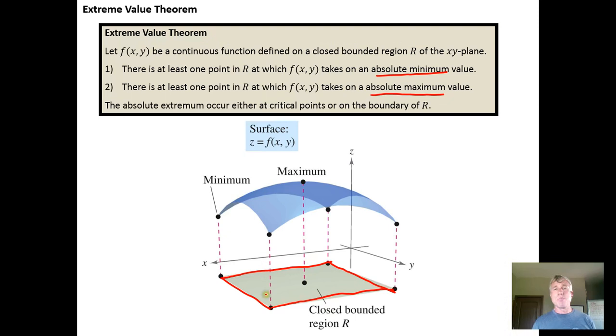And the largest or smallest value can occur in a couple ways. One, it's possible for the maximum to be at one of the critical numbers - or sorry, critical points, because we're working with critical points now, ordered pairs. That's a function of two variables.